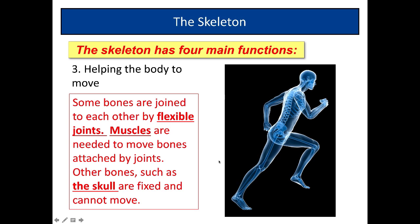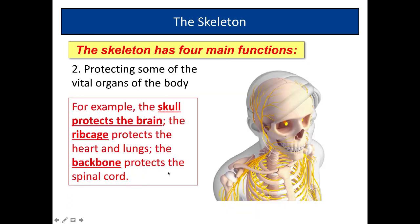Thirdly, we've got the bones helping the body to move. Some bones are joined to each other by flexible joints. Here you've got your knee joint. Here you've got your hip joint. You've got your elbow joint there, and here you've got your shoulder joint. All of those are where muscles are attached to bones, and they help the bones to move. Other bones, such as the skull, are fixed and cannot move.